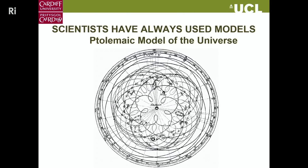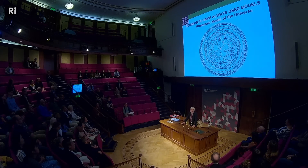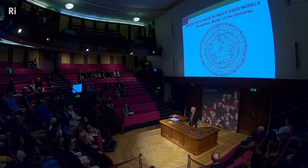Here is the Ptolemaic model of the universe — a highly complex three-dimensional model with intersecting trajectories and spheres that rationalised some astronomical observations in the ancient world. It's an Earth-centred model. One has sympathy with the King of Aragon — I think it was in the 12th century — who said when he saw this model, if I had been the almighty, I think I would have tried to make something simpler.